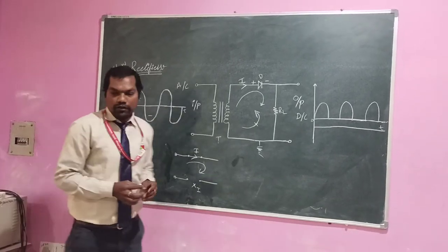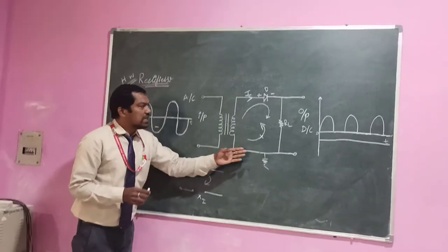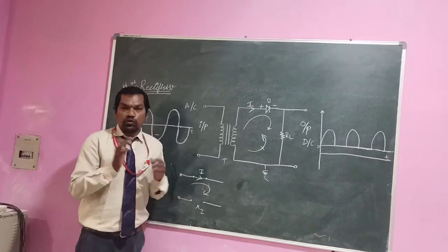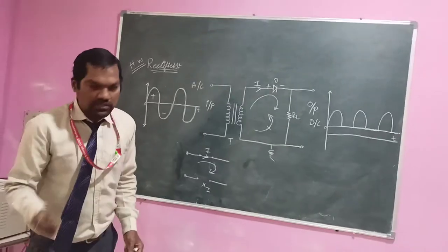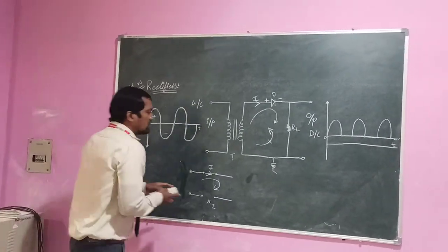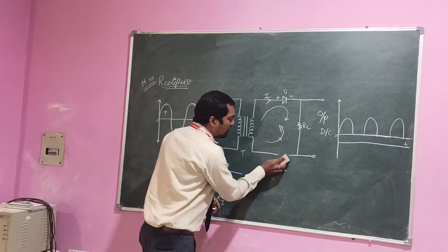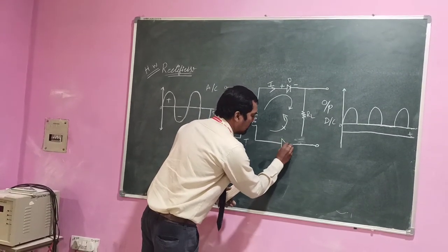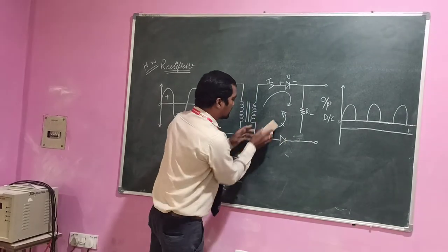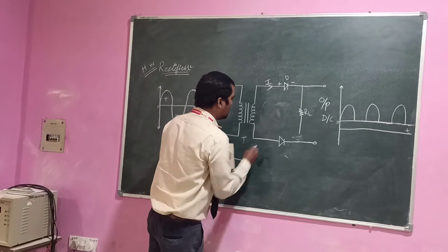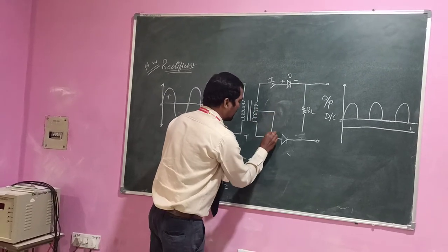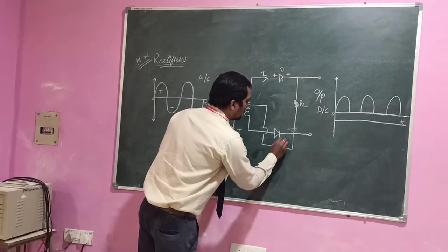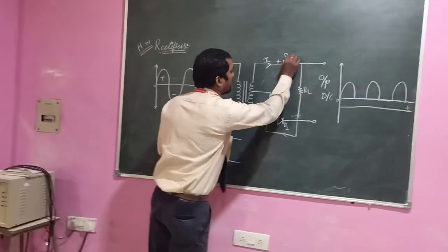Next, I will explain the full wave rectifier. There is just a small difference. In the full wave rectifier, we will use two diodes — diode one and diode two.